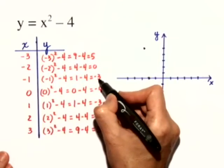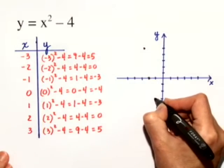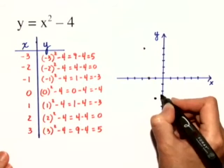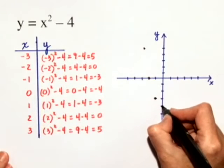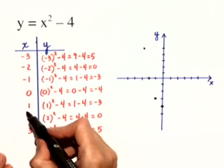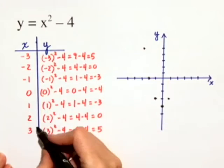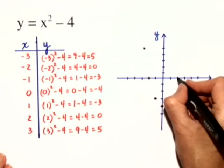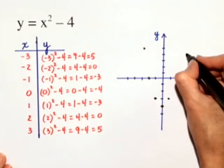When x is negative 1, y is negative 3. There's another point on our graph. And when x is 0, the y value is negative 4. That's going to be the vertex of our parabola. When x is 1, y is negative 3. When x is 2, the y value is 0. And when x is 3, the y value is 5.